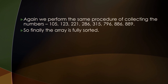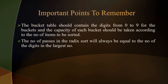There are a few important points to remember. The bucket table should contain digits from 0 to 9 for the buckets, and the capacity of each bucket should be set according to the number of items to be sorted. In this example, each bucket can store up to 10 items, but for larger arrays this can be extended to 20, 25, or 1000 items per bucket. The number of passes in radix sort will always equal the number of digits in the largest number — if the largest number has 5 digits, there will be 5 passes.